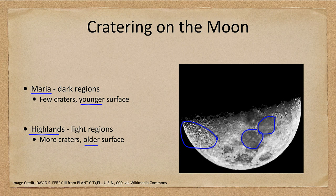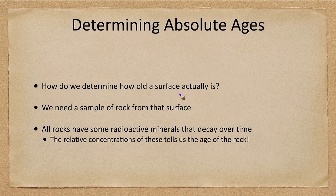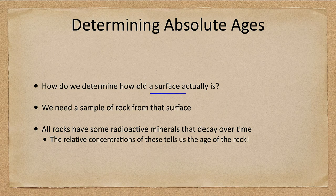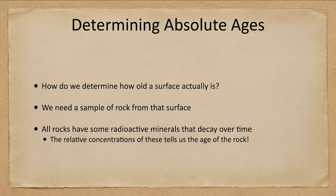We have to be able to calibrate crater density, and that's what we do with our moon — we have the most samples and the most regions we've been able to date. To get an absolute age, we need a rock sample in order to study the radioactive materials within it. Every rock has radioactive materials that decay over time, and their relative concentrations can tell us the age of the rock. This is done using the concept of a half-life.